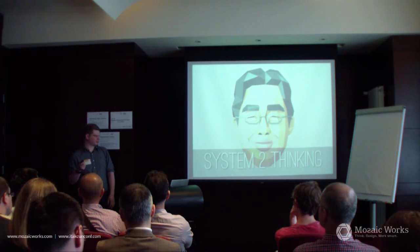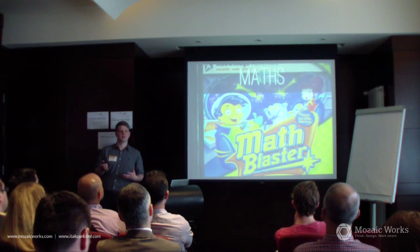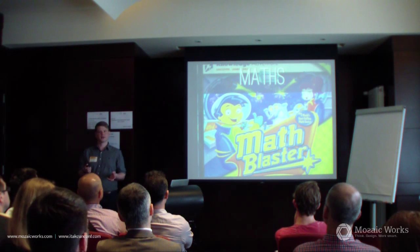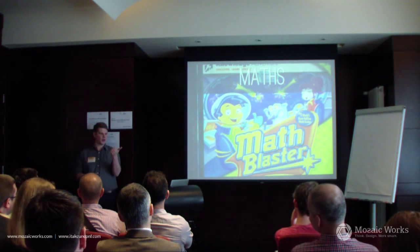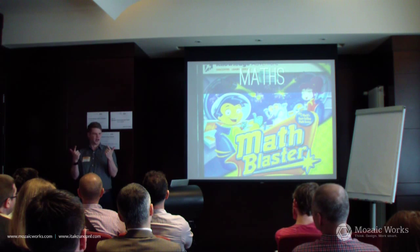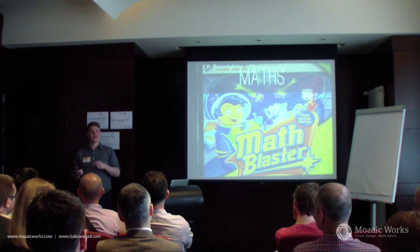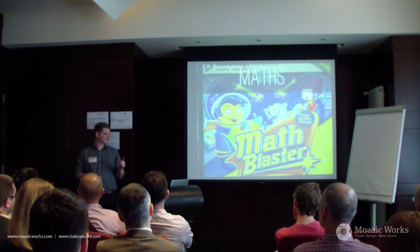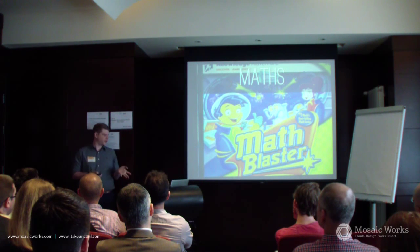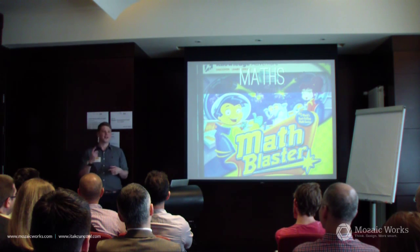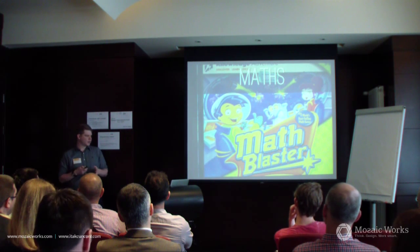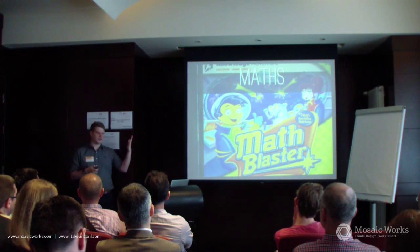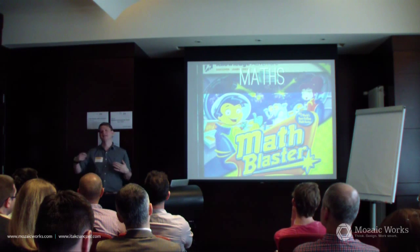Let's talk about maths examples. What is 2 plus 2? It's 4 — you just knew that. You didn't have to think it through. That's System 1 thinking, a snap decision. But what is 657 times 453? You have to actively engage System 2 thinking to work that out — it's a conscious effort. So the comparison is: System 1, you know the answer; System 2, you have to actively engage to get to the answer.